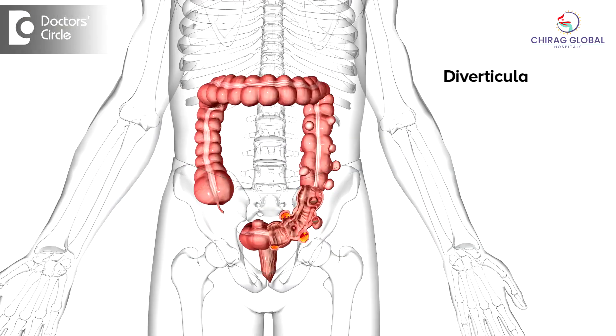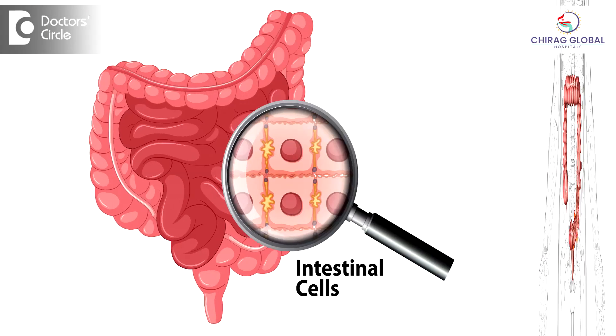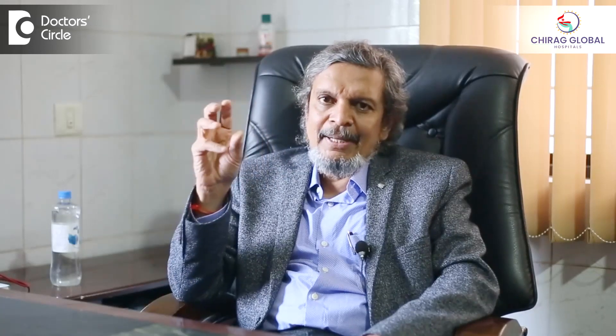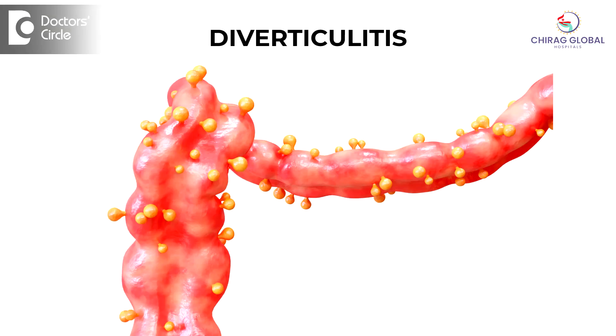Now about diverticula in the sigmoid colon. Diverticula are nothing but small pouches in the wall of the large intestine. The intestines are made of two layers of muscles — one longitudinal muscle, one circular muscle — and they are lined internally by a lining membrane called the mucous membrane, and outside it is covered with what is called the serosa. So the whole large intestine is made of this sort of structure. When there are gaps between these two muscles, the lining membrane inside the large intestine protrudes through those gaps, and that is what we call diverticula.